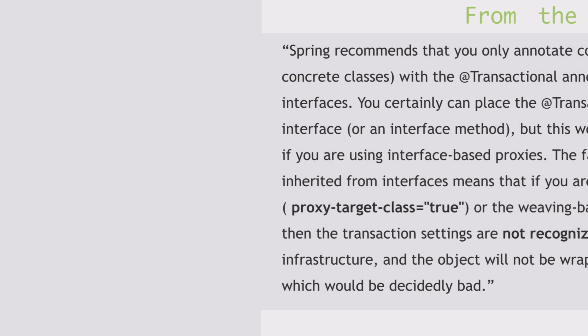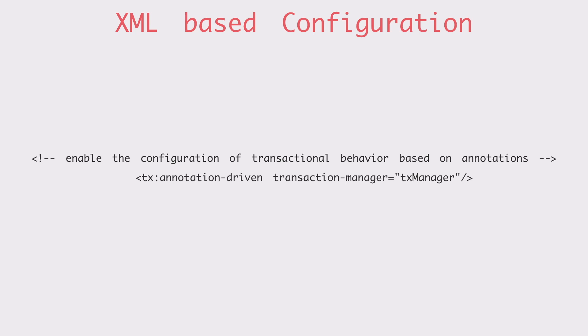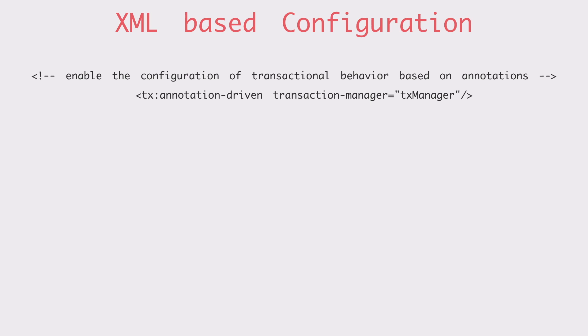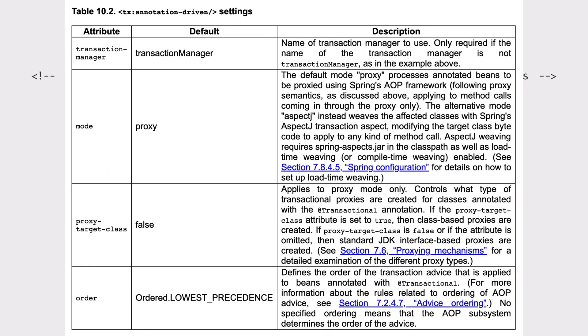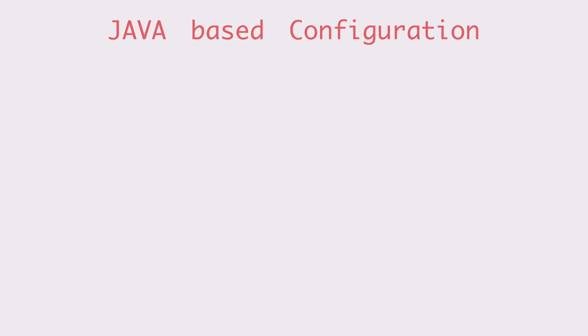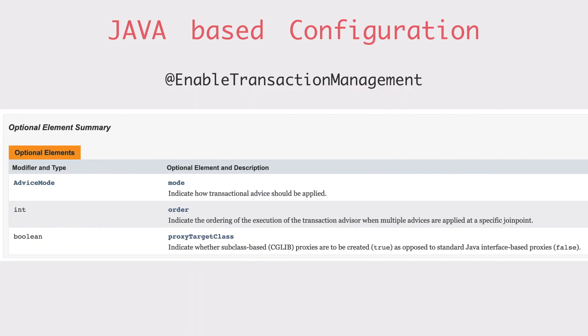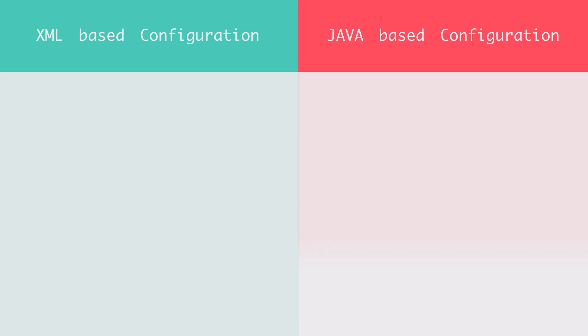This is about the transaction configuration in Spring. When using XML-based configuration, there will be a line in the config file to enable annotation-driven transaction management, with settings for transaction manager, mode, proxy-target-class, and order. Since we are using Java-based configuration, the equivalent is the @EnableTransactionManagement annotation, which has three optional elements: mode, order, and proxy-target-class. Regardless of whether you use XML or Java-based configuration, if you have not specifically set these attributes, the default values apply.